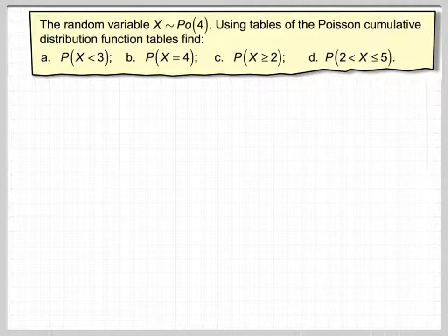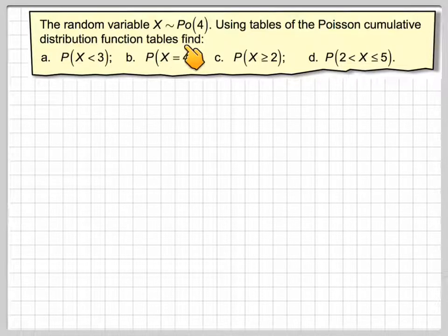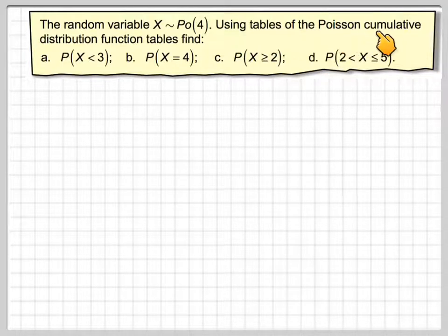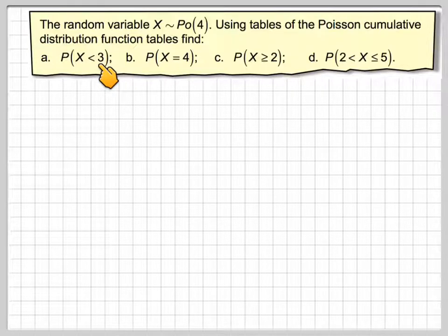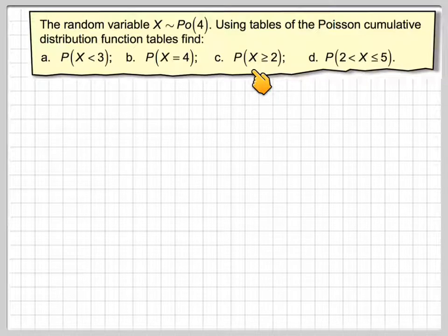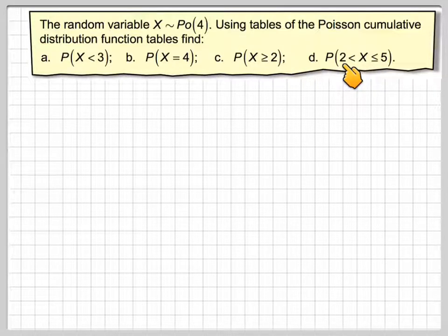In this video we're going to use the Poisson cumulative distribution function tables to find probabilities. We have a random variable X Poisson distributed with lambda 4. Using tables of the Poisson cumulative distribution table, we'll find the probability that X is less than 3, the probability that X equals 4, the probability that X is greater or equal to 2, and the probability that X is greater than 2 but less than or equal to 5. We'll get our Poisson cumulative distribution tables from GeoGebra.